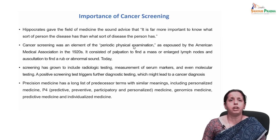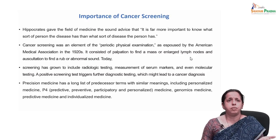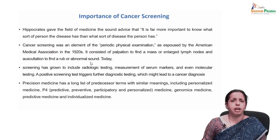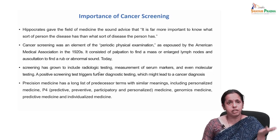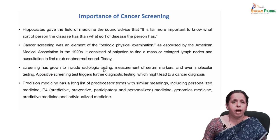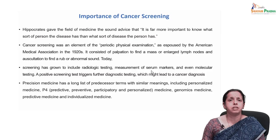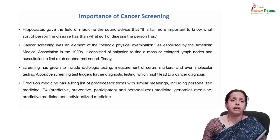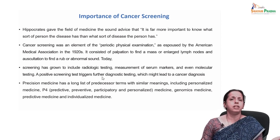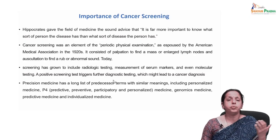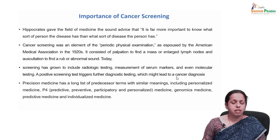Cancer screening was an element of the periodic physical examination before the 1920s, consisting of palpation to find a mass, enlarged lymph nodes, or an abnormal sound. Today, screening has grown to include those traditional visible methods, but also radiological testing, measurement of serum markers, and molecular testing. If any test is positive, it requires further diagnostic workup, which narrows down the cancer screening timeline.